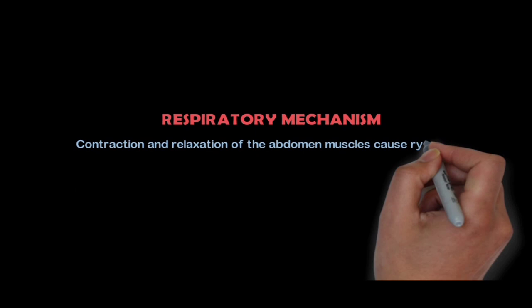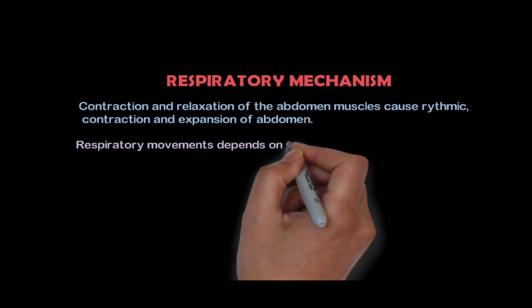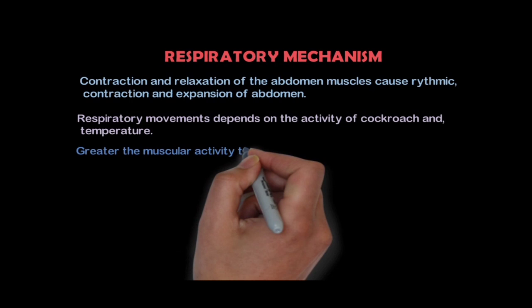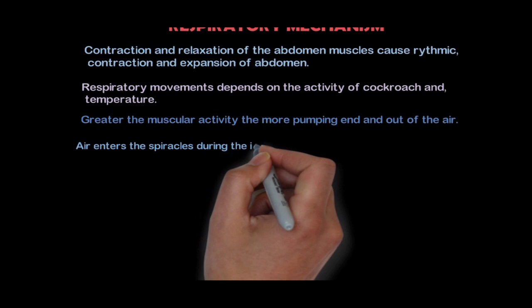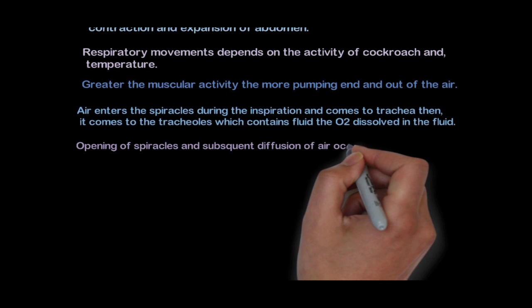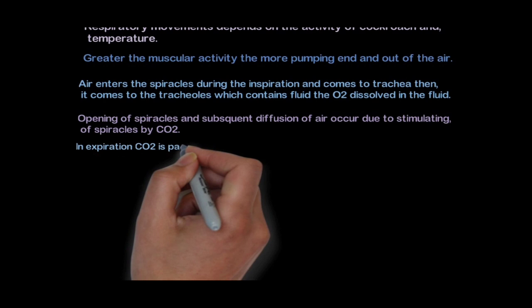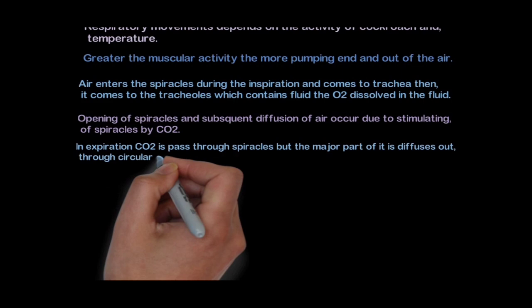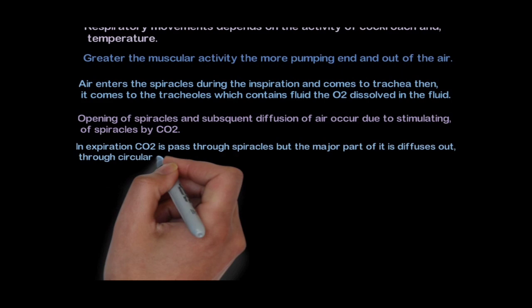Respiratory Mechanism: Contraction and relaxation of the abdominal muscles cause rhythmic contraction and expansion of the abdomen. Respiratory movements depend on the activity of the cockroach and temperature; greater muscular activity causes more pumping in and out of air. Air enters the spiracles during inspiration and comes to the trachea, then to the tracheoles which contain fluid; oxygen dissolves into the fluid. The opening of spiracles and subsequent diffusion of air occurs due to stimulation of the spiracles by carbon dioxide. In expiration, carbon dioxide passes through the spiracles, but the major part diffuses out through the cuticle covering of the body, as carbon dioxide also dissolves in plasma and reaches the body surface, which is permeable to gases.